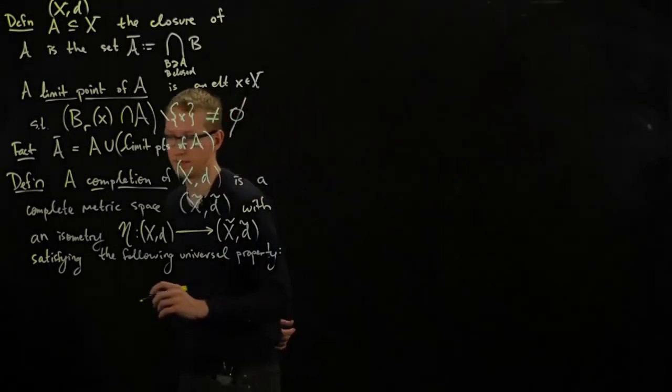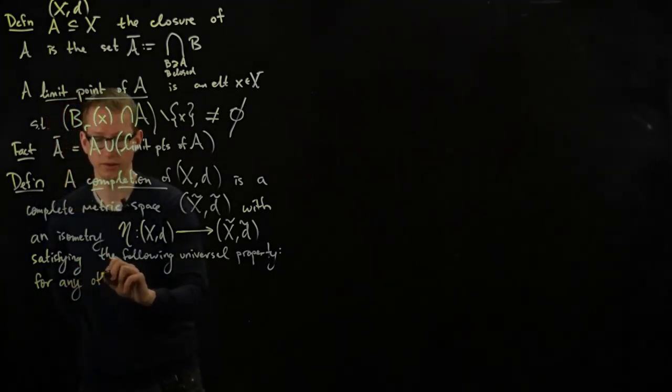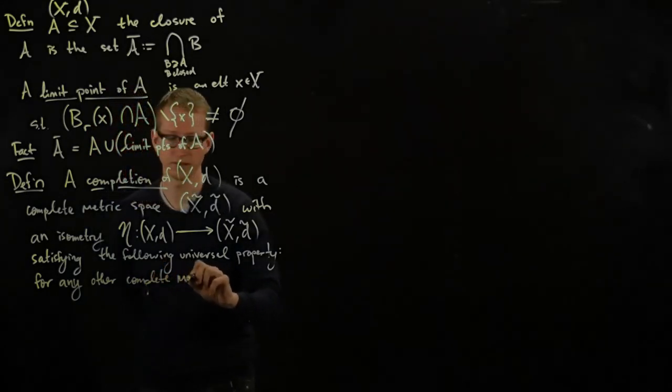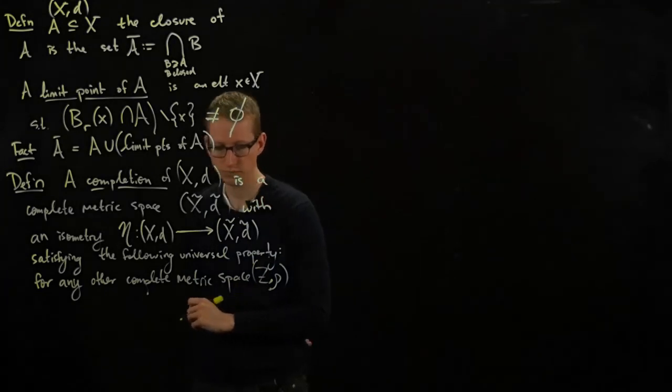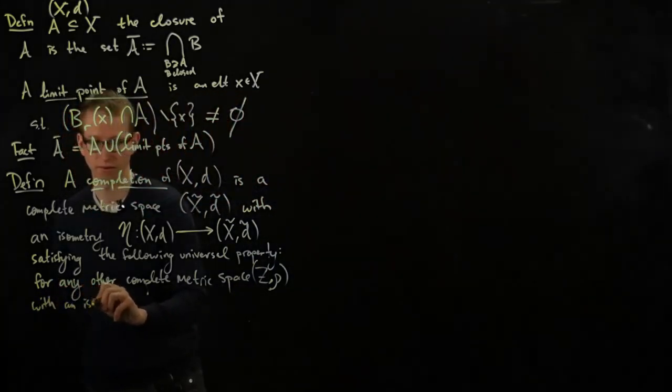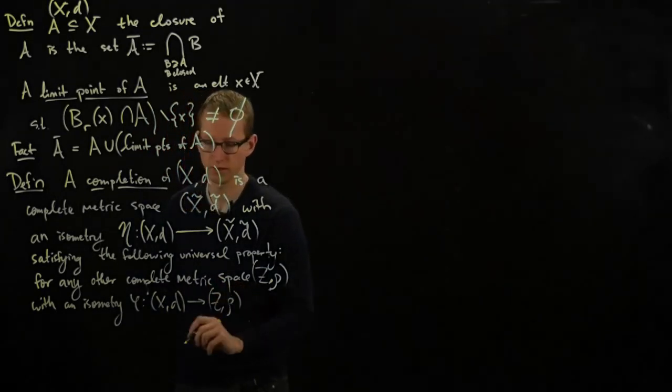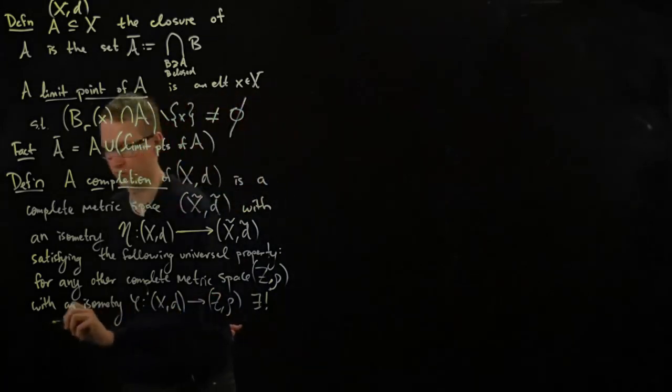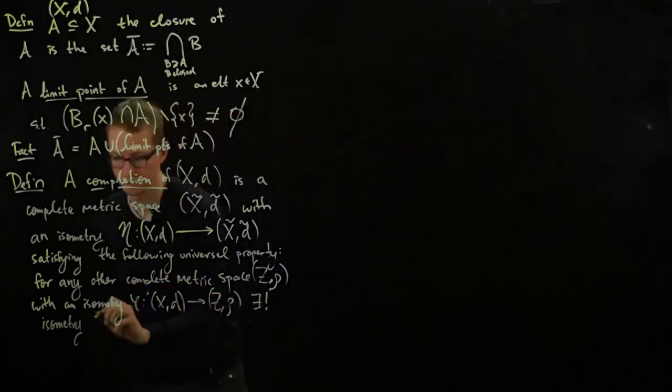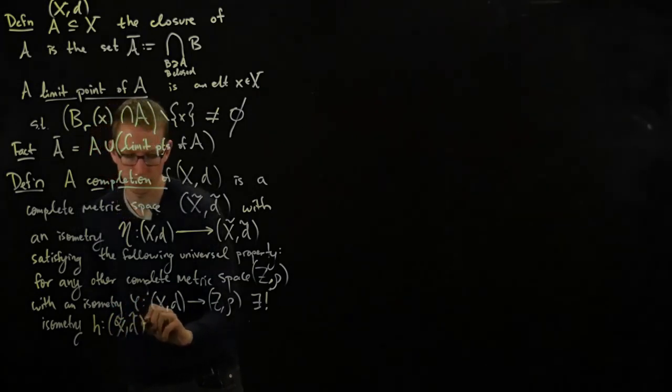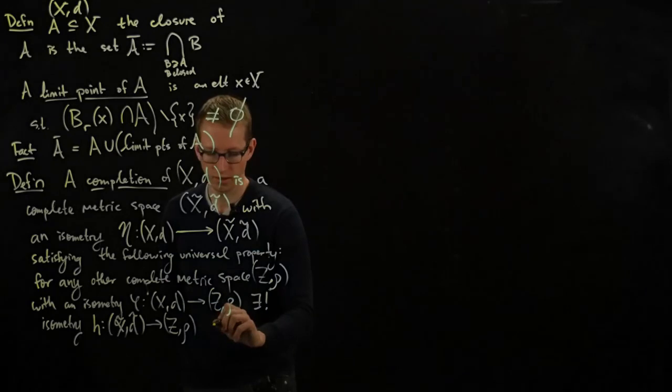That's what the following universal property is going to say. So if you write out what all of that actually means, more precisely, it says for any other complete metric space z, let's call it rho, since I don't want to use a d, let's say phi from x, d to z, rho, there exists a unique isometry from our completion to that imposter. And this is our way of saying that our completion is the smallest such complete metric space.